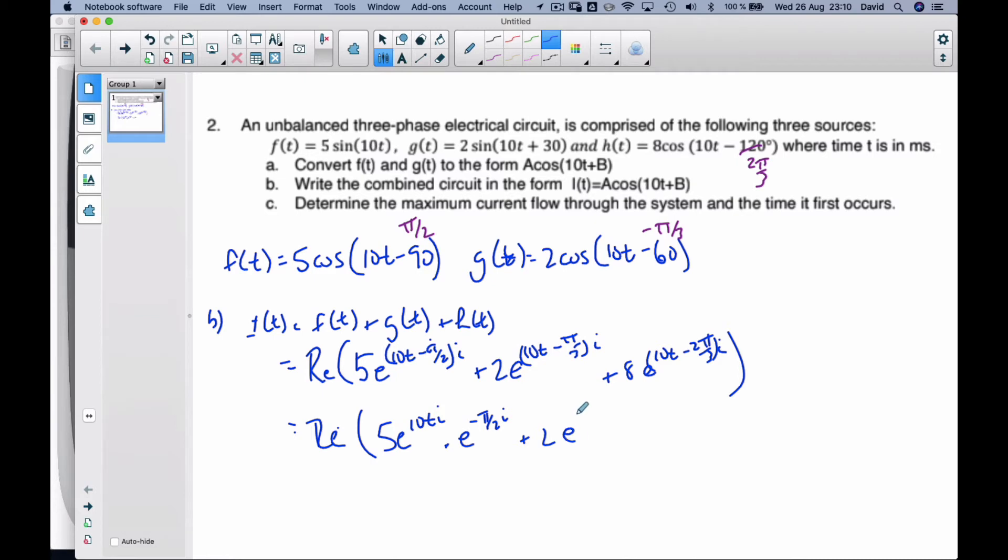Because when I'm multiplying, I add these together. So 2e^(10ti) times e^(-π/3i) + 8e^(10ti) times e^(-2π/3i). And now if I recognize what I see,